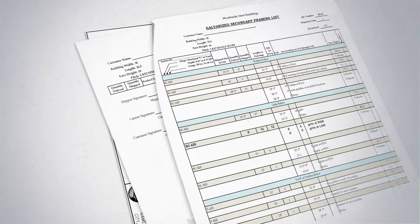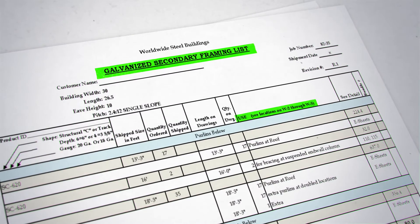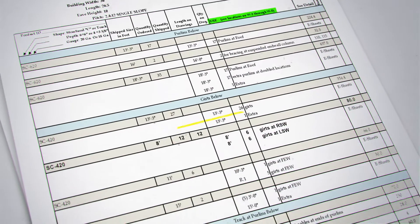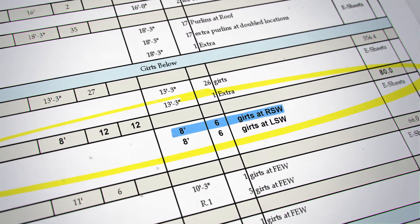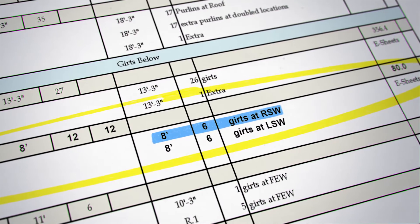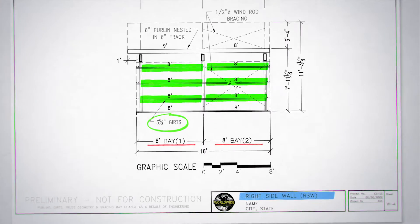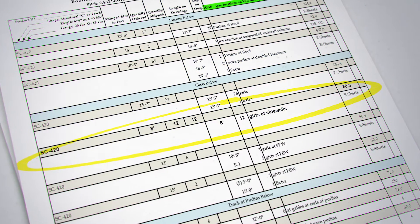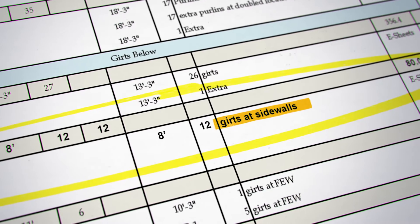On the Galvanized Secondary Framing List, you will have the location or use for each secondary member. For the sidewall girts, locate the necessary secondary members that indicate they are for RSW right sidewall or LSW left sidewall that pertain to the sidewall you are working on. If the girts are identified only as girts at sidewalls, then these girts are used at both sidewalls.